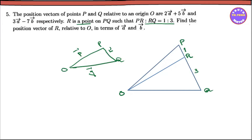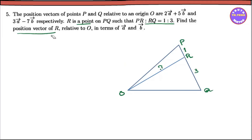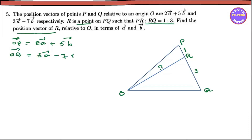You can find the position vector of R — OR vector. We use the section formula. This gives us OA and OB components. OR vector equals, using the section formula with M and N values.